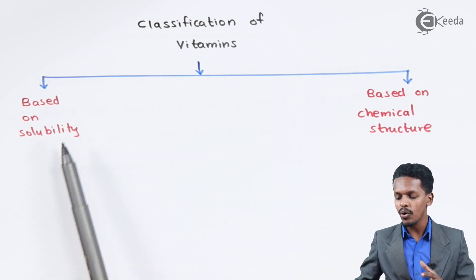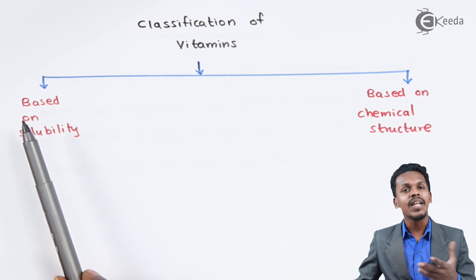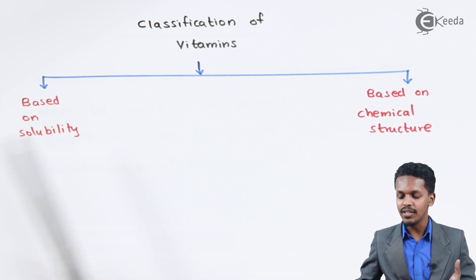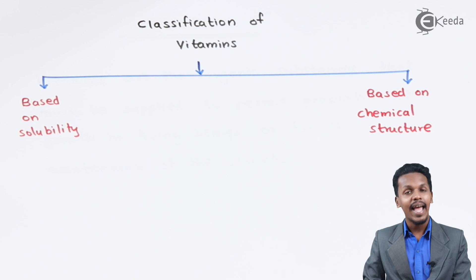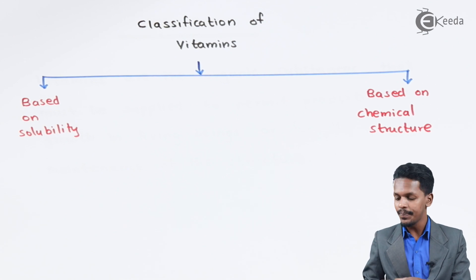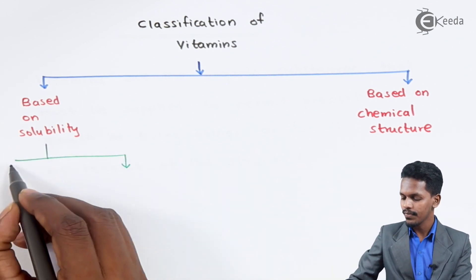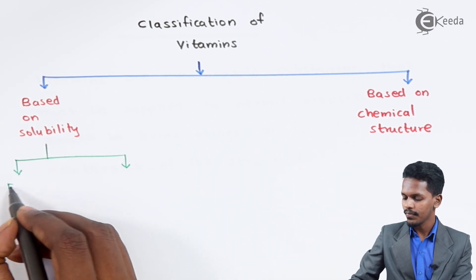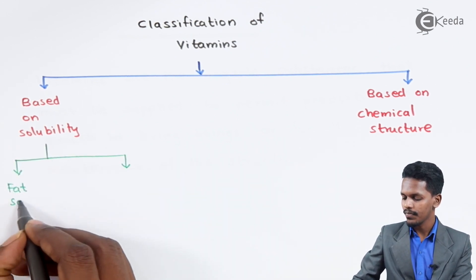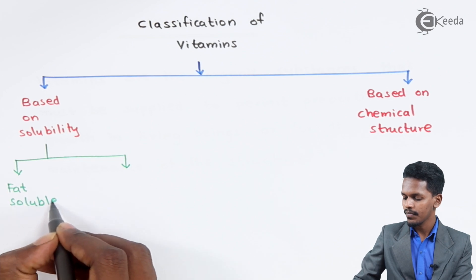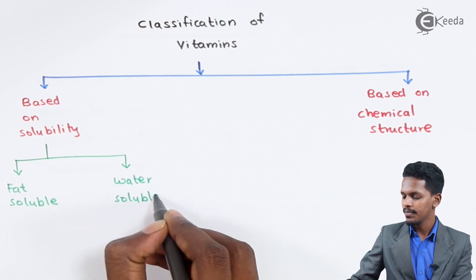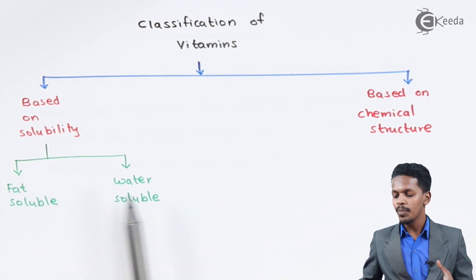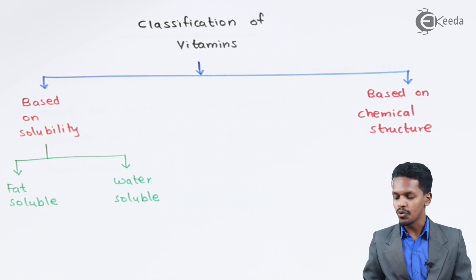If we talk about the classification of vitamins based on solubility, they are divided into two types: fat-soluble and water-soluble.